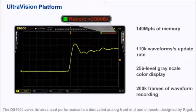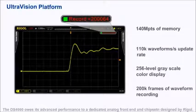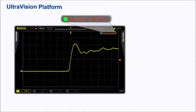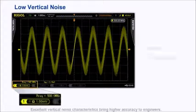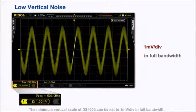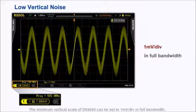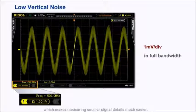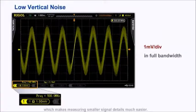The DS4000 owes its advanced performance to a dedicated analog front end and chipset designed by Rigol. Excellent vertical noise characteristics bring higher accuracy to engineers. The minimum vertical scale of the DS4000 can be set to 1 mV per division in full bandwidth, which makes measuring smaller signal details much easier.